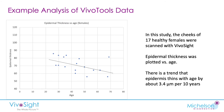Moving on to some examples of studies with these parameters: here's an analysis where we looked at 17 healthy females of a variety of ages between 25 and 70, and plotted epidermal thickness against age. It's quite clear that there's a downward trend — the epidermis does thin with age by about 3 to 4 microns per decade. There's quite a bit of scatter, but nevertheless a clear trend.